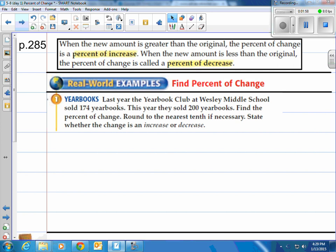It says, last year the yearbook club at Wesley Middle School sold 174 yearbooks. This year they sold 200 yearbooks. I can tell you right now that's gonna be an increase because last year was 174, this year is 200. That's up. So that's increase. Find the percent of change, round to the nearest tenth if necessary, and state whether the change is an increase or decrease. Well it's an increase already, so I know that.